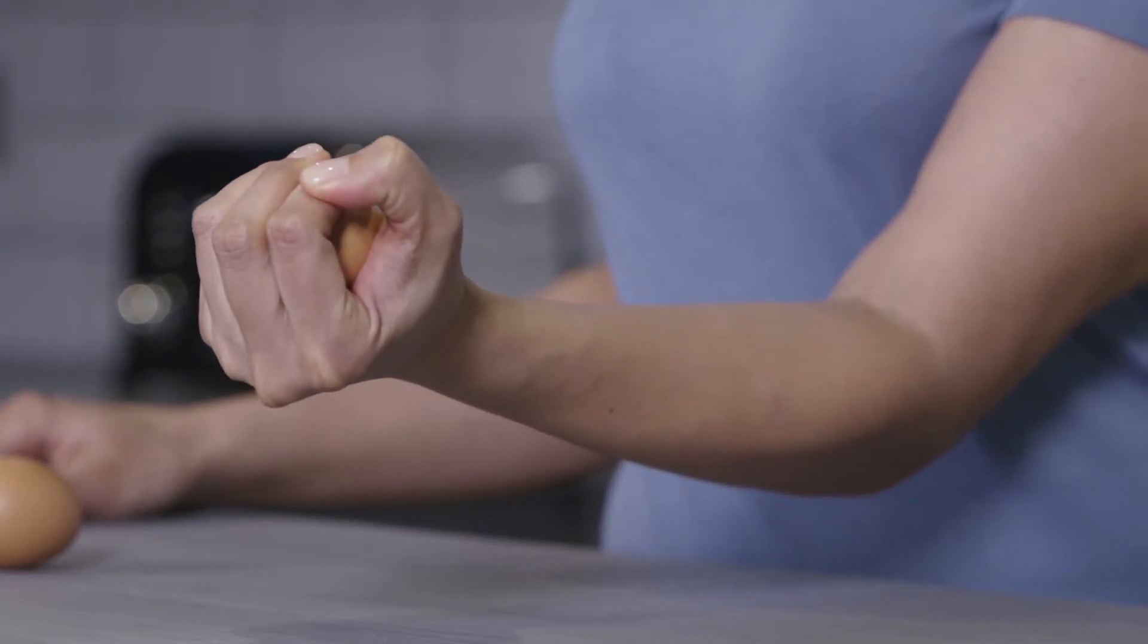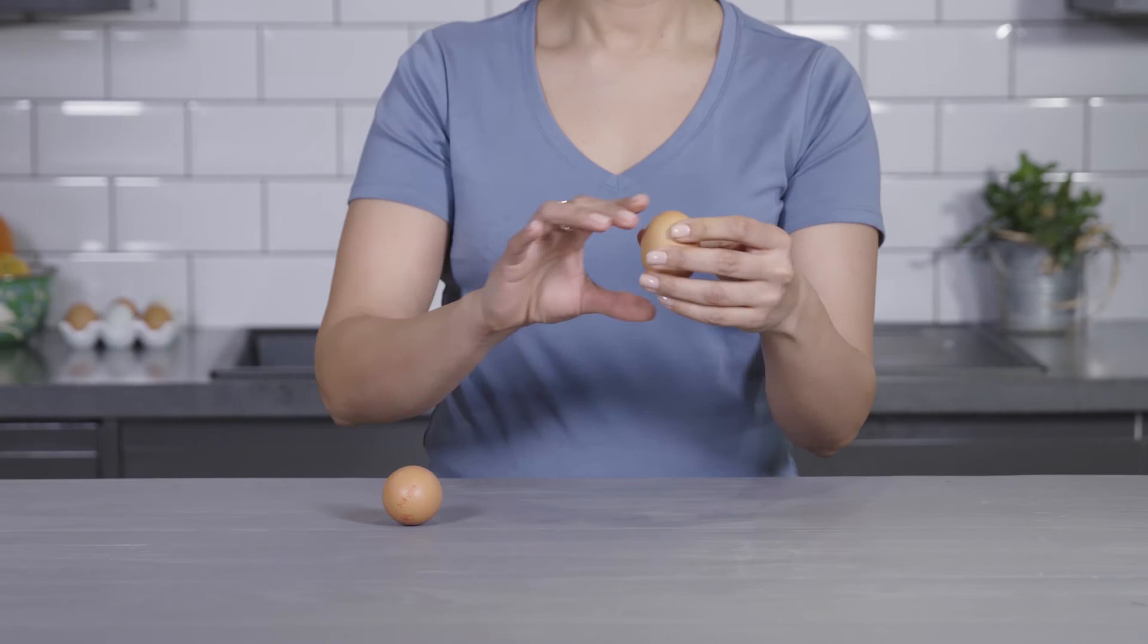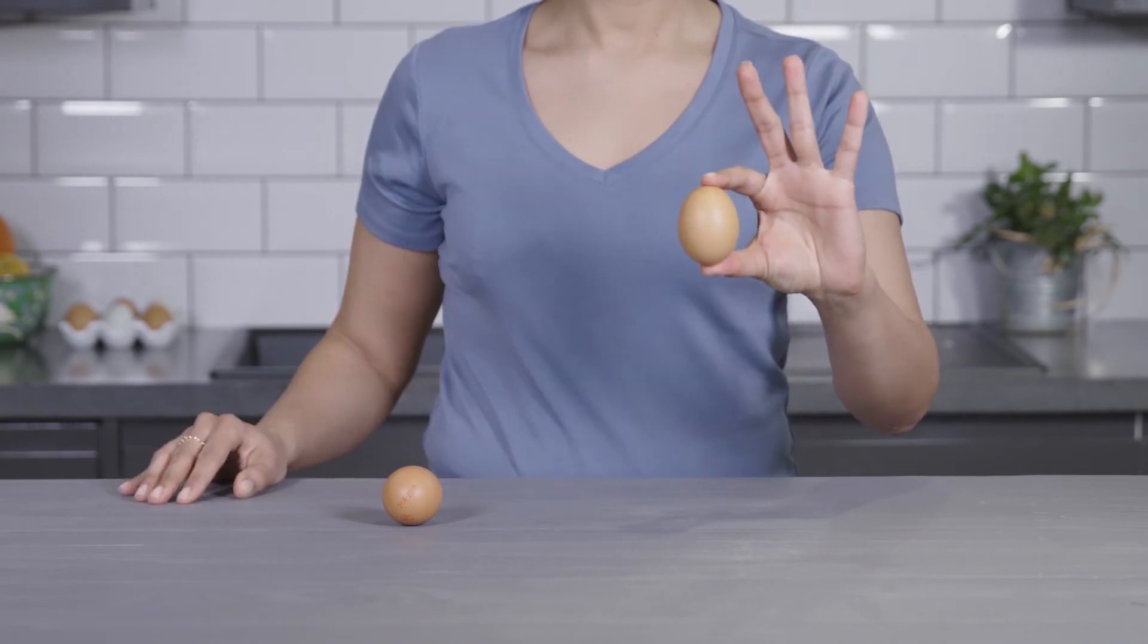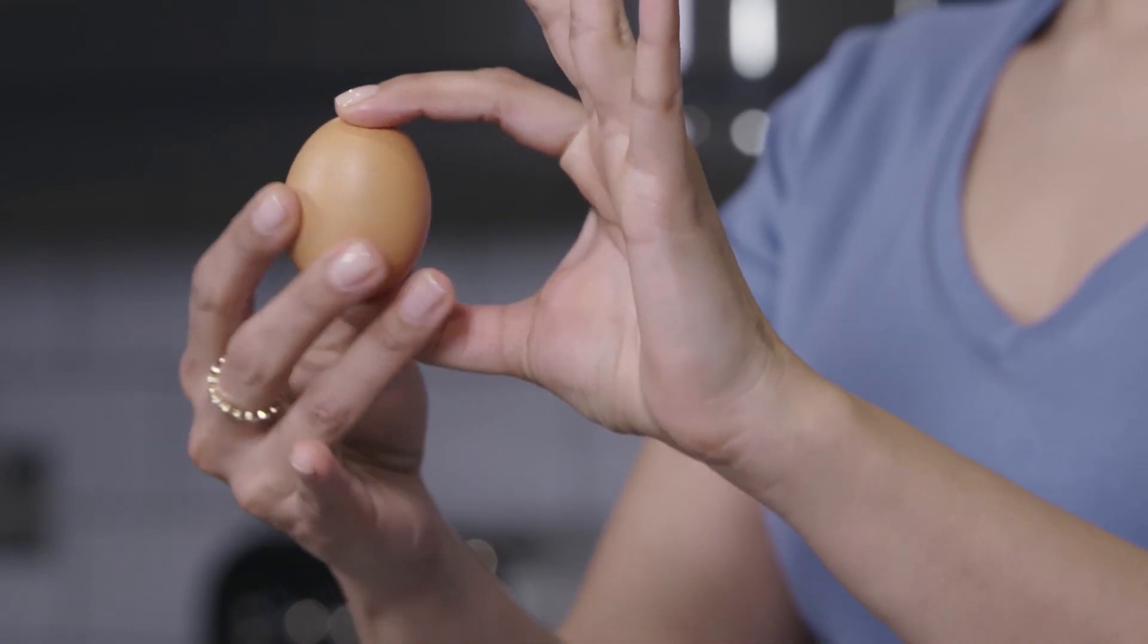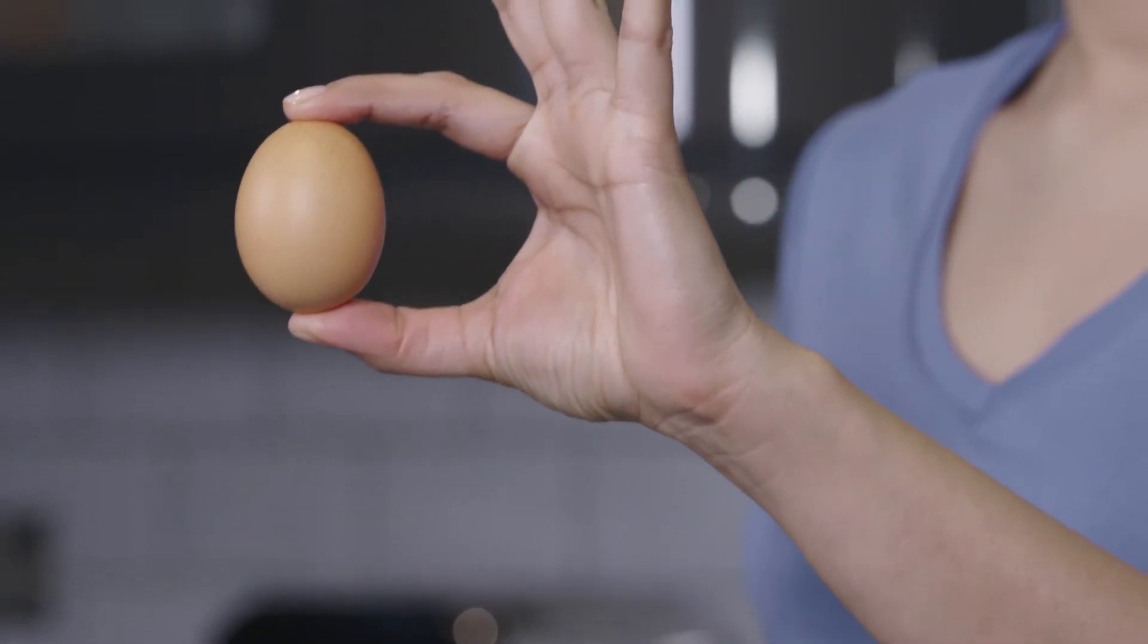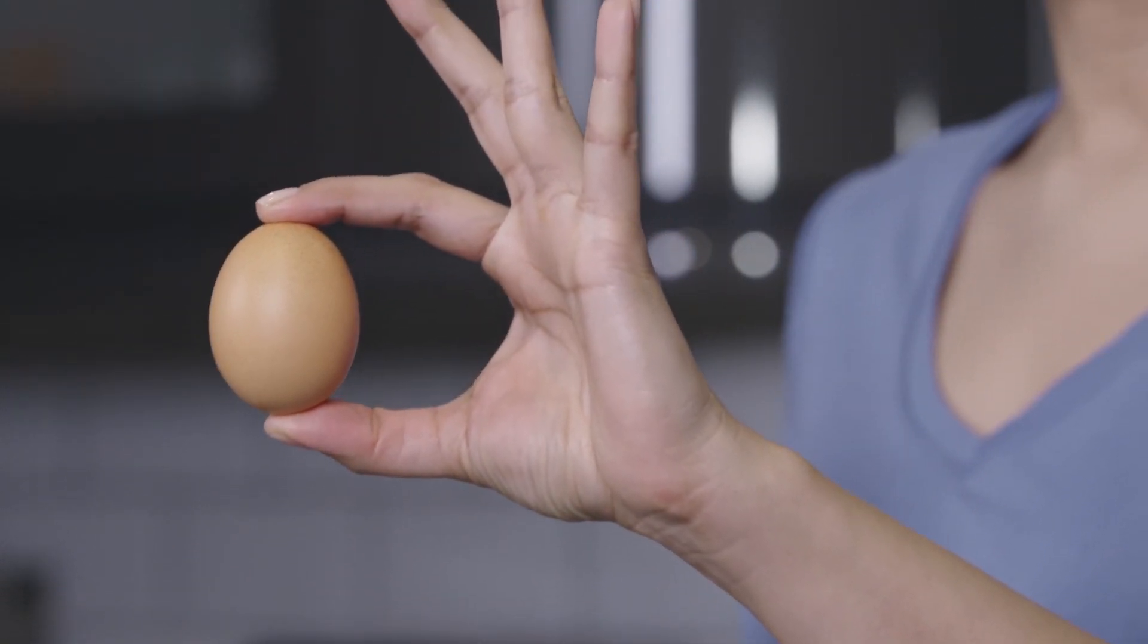Although the eggshell itself is really fragile, its dome shape makes it incredibly hard to break. When you squeeze it, the curve of the egg spreads the pressure evenly across the whole surface. So there's less stress and strain on the egg.